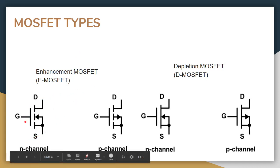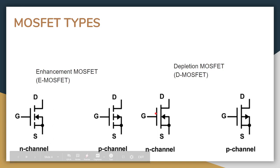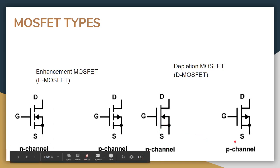This is the symbol for the N-channel E-MOSFET, and this is the symbol for the P-channel E-MOSFET. Similarly, this is the symbol for the N-channel D-MOSFET, and this is the symbol for the P-channel D-MOSFET.